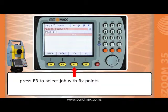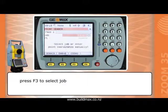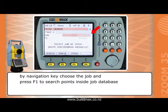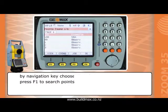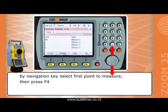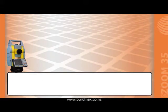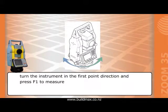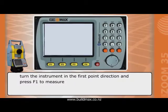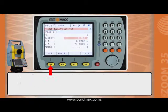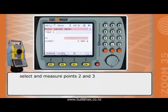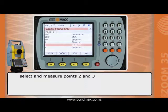Search for points inside the job database. Press F3 to select the job with fixed points. By navigation key choose the job and press F1 to search points inside the job database. By navigation key select the first point to measure and press F4. Turn the instrument in the direction of the next point and press F1 to measure. Select and observe points 2 and 3.